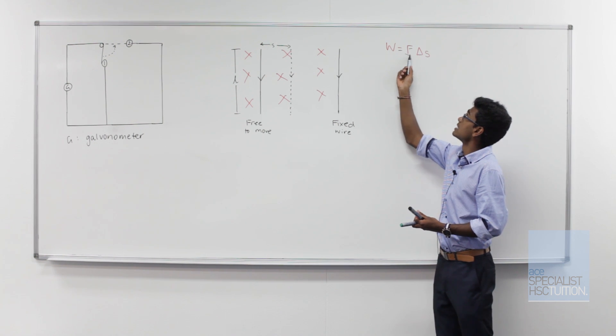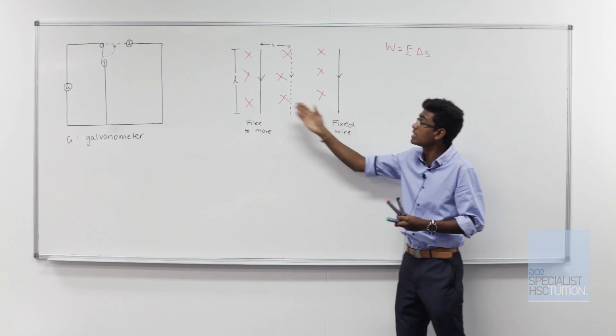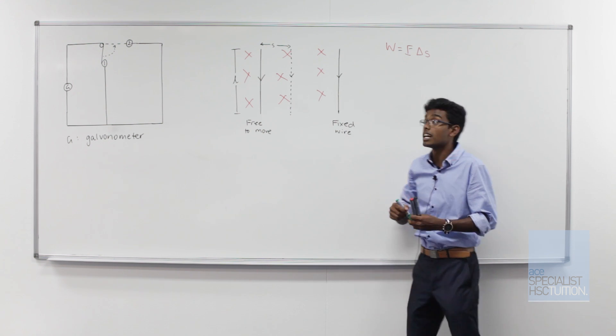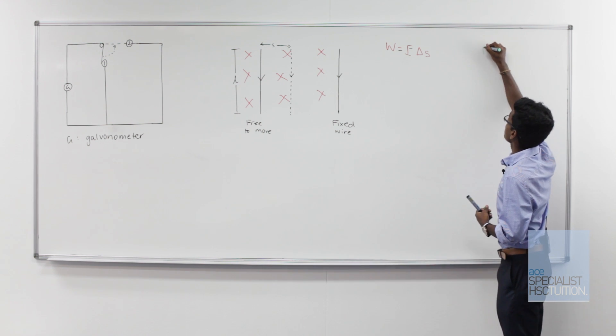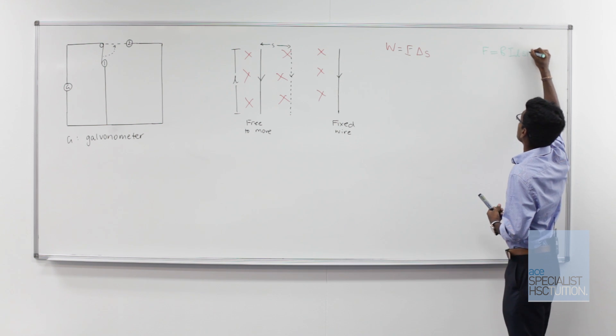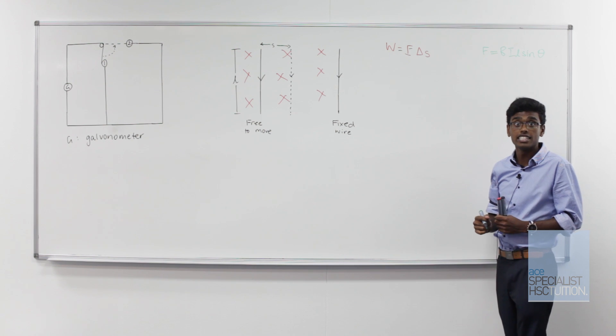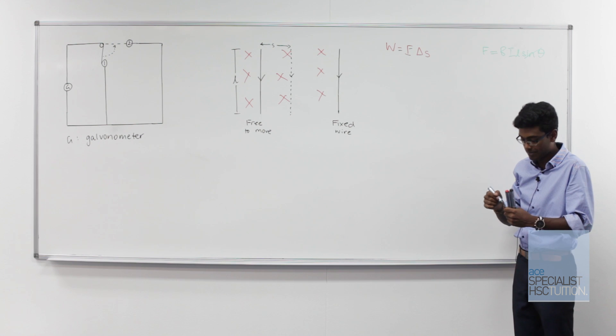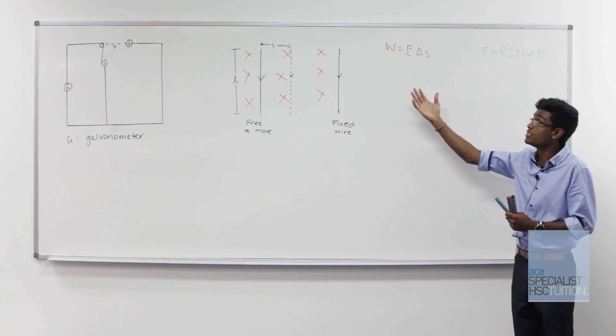Let's consider the force. We have a current-carrying conductor in a magnetic field experiencing a force. We know that that formula is F equals BIL sine theta. Since theta is 90 degrees, we can assume that sine theta is equal to 1. Let's substitute that into our formula.